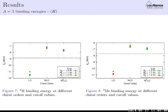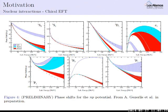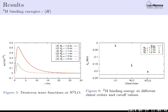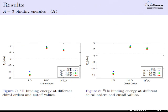Does this include a three-body force? No — any calculation using chiral EFT at N2LO without a three-body force is incomplete, and that is what this is. Including the three-body force is the next step, and we want to do it in a way that uses exactly the same regulator and cutoffs, so that the two- and three-body forces are derived in concert with one another.